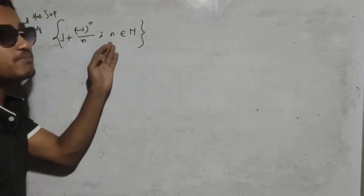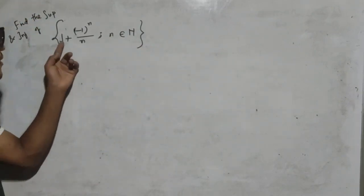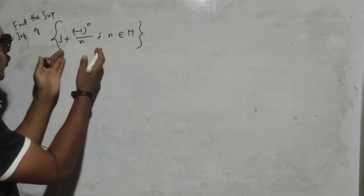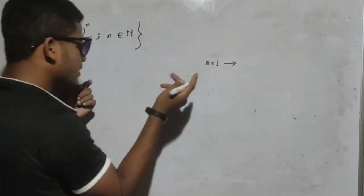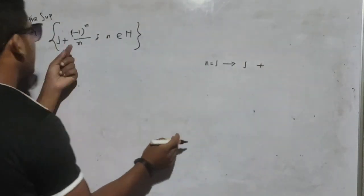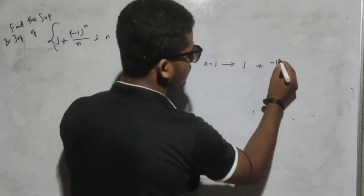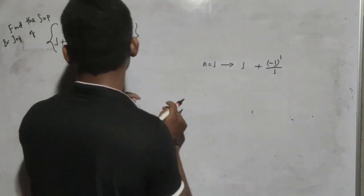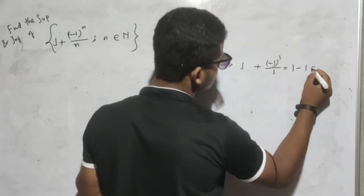For different values of the natural number n from 1 to infinity, you will get the elements of this set. When n is equal to 1, you will get the element 1 plus (-1) to the power 1 divided by 1, which gives 1 minus 1, equal to 0.